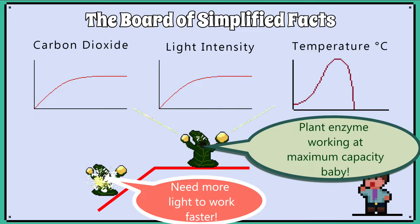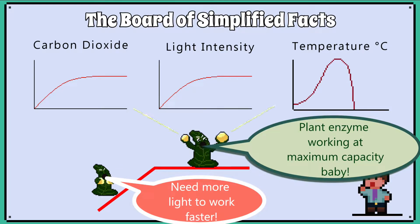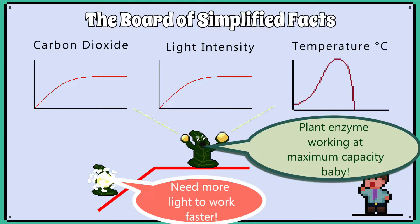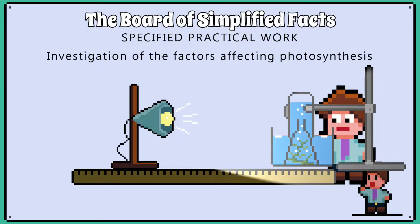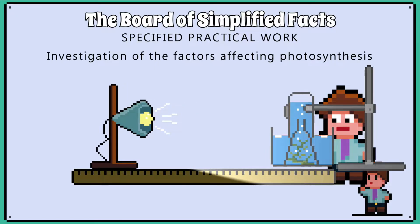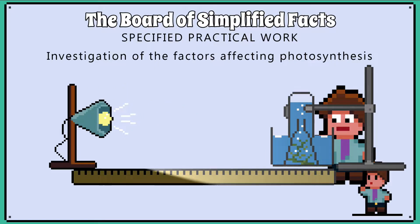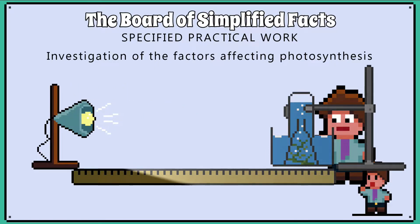Limiting factor graphs regarding photosynthesis are easy to interpret once you understand what a slope versus a horizontal line means from the plant's perspective. We will cover how to interpret these graphs and the specified practical, which is an investigation looking at how changing light intensity affects the rate of photosynthesis in pondweed.